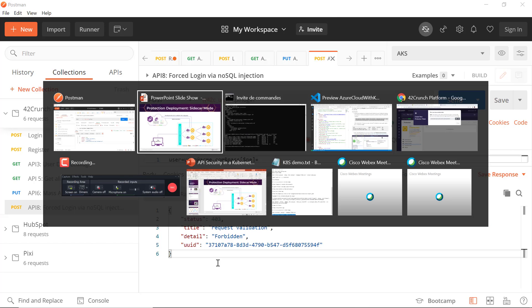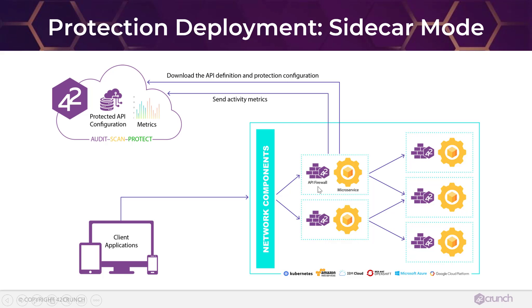If I try to send my NoSQL injection, it gets blocked as well. So basically what we've demonstrated is that by adding that micro firewall right in front of my microservice and configuring my Kubernetes deployment to use it, I automatically protected it. This API micro firewall is very efficient — it didn't affect performance in a negative way, it runs within the same pod, but it's very effective at protecting against any possible attacks because it has that API definition and can use it to enforce the contract.